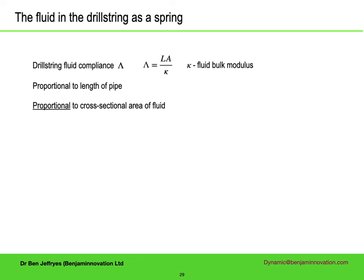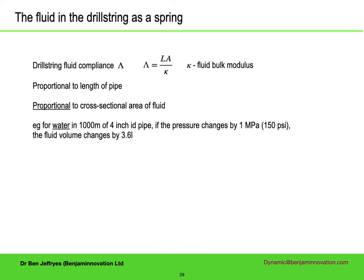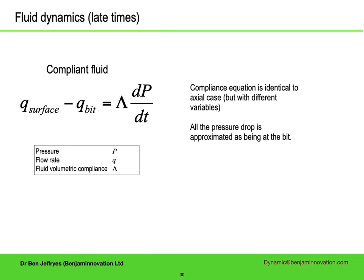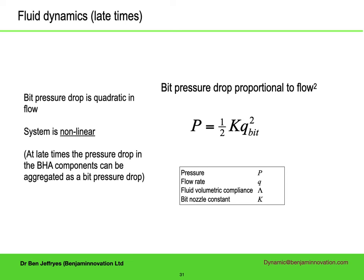What does this compliance mean? For water, a pressure change of 1 MPa (about 150 pounds per square inch) changes the fluid volume contained in 1000 metres of typical drill pipe by 3.6 litres. Water-based mud, due to the added solids, will be slightly stiffer than this. Oil-based mud, on the other hand, can be much less stiff — up to twice as compliant, so double the volume change. So what does the dynamics actually look like at late times? Here I am going to make a big approximation: that all the pressure drop is at the bit, not along the pipe. Then we get an equation very similar to the one for axial velocity — the difference between the surface and bit values is proportional to the rate of change of the pressure. There is a big difference hiding in this equation, though, which is that the pressure drop across the bit is not proportional to flow but proportional to flow squared.